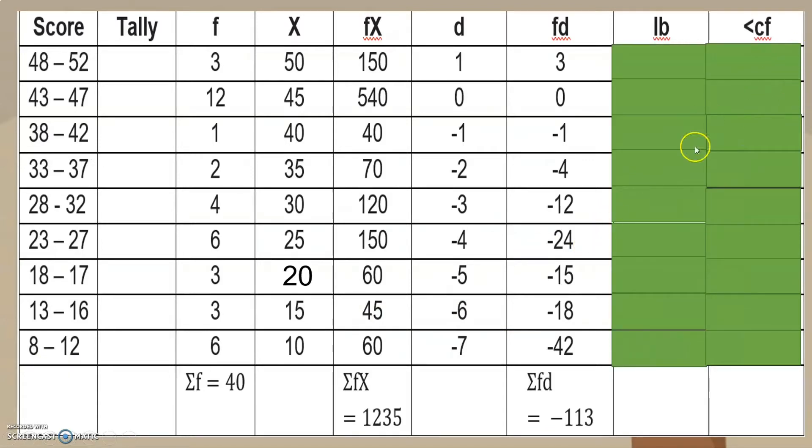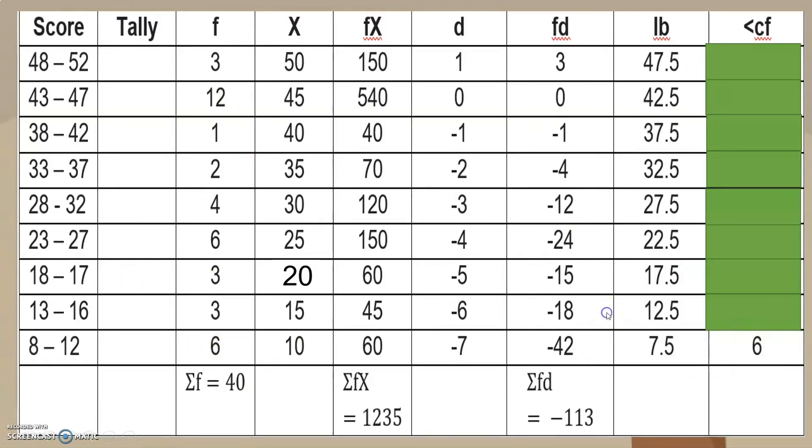Okay, for the less than CF. So, less than yan. So, meaning to say, mag-start tayo sa pinaka-baba. Cumulative frequency. Diba dun sa nakaraang frequency distribution table, nakuha natin yung CF. Yan yung ina-add natin yung previous and current, yung current and previous frequency. So, ano ba yung frequency natin dito? 6. Okay, kaya naman, 6 ang ilalagay natin dito sa baba. So, next, 6 plus 3, that is 9. 9 plus 3, that is 12. 12 plus 6, that is 18.